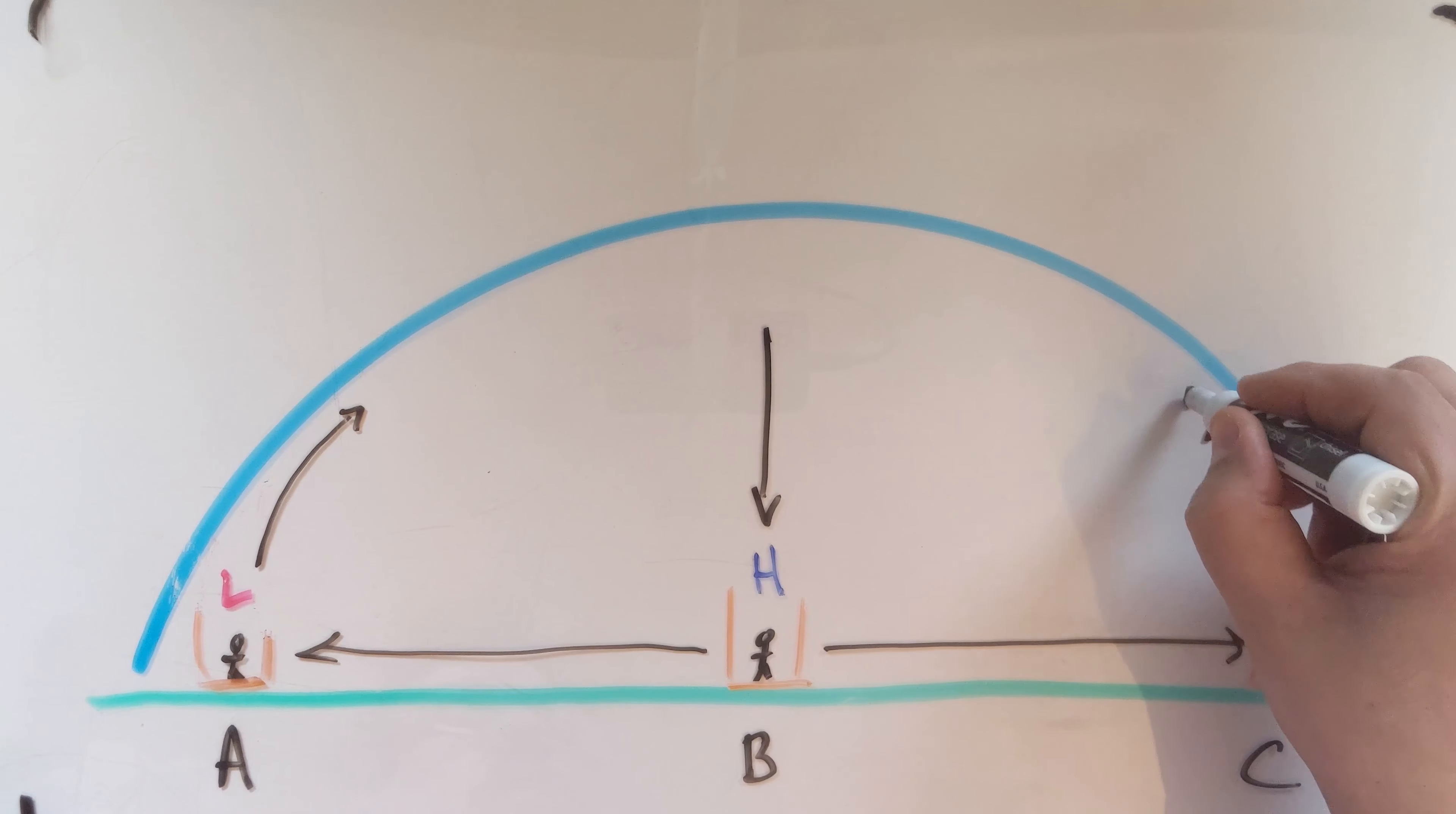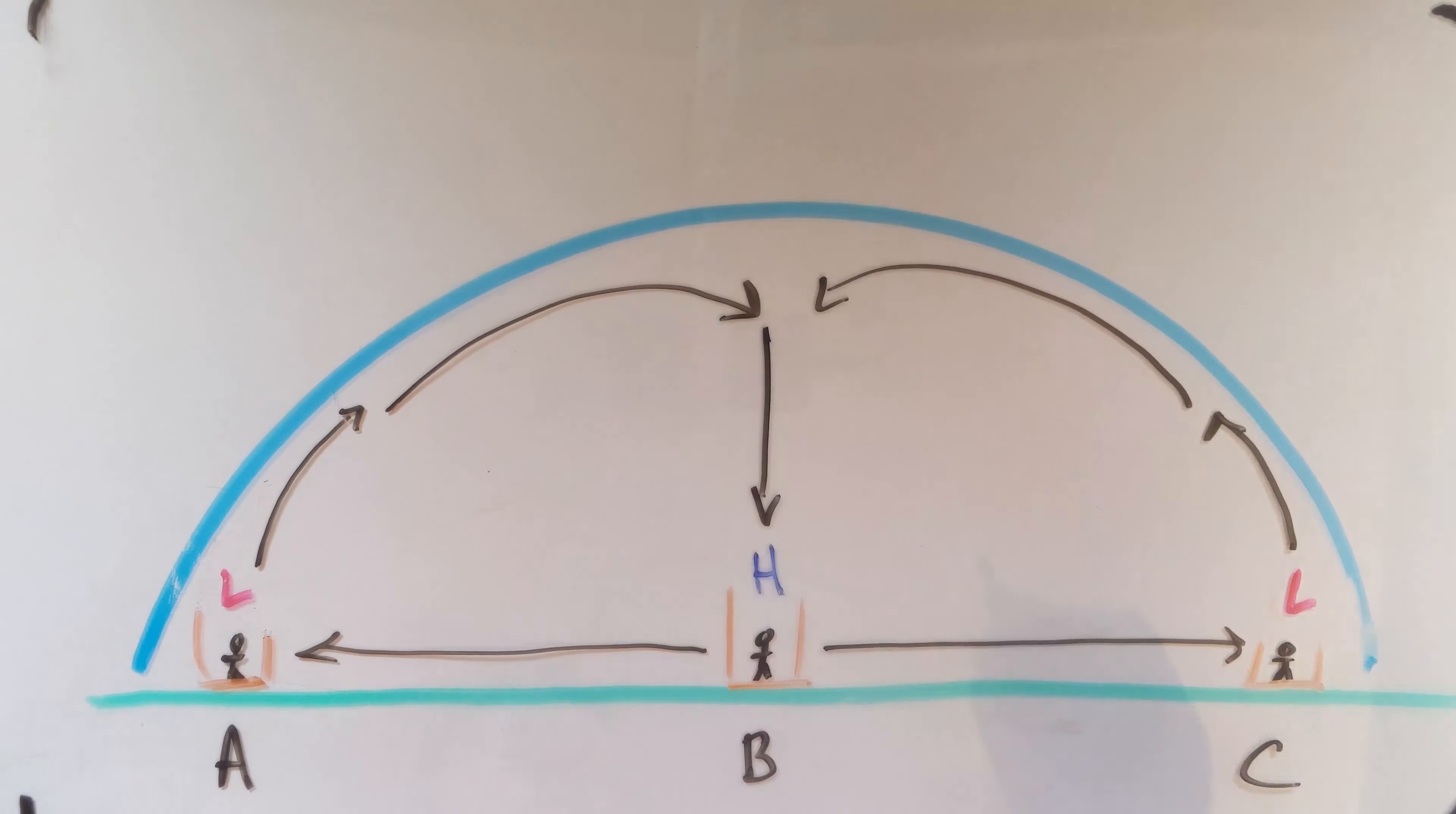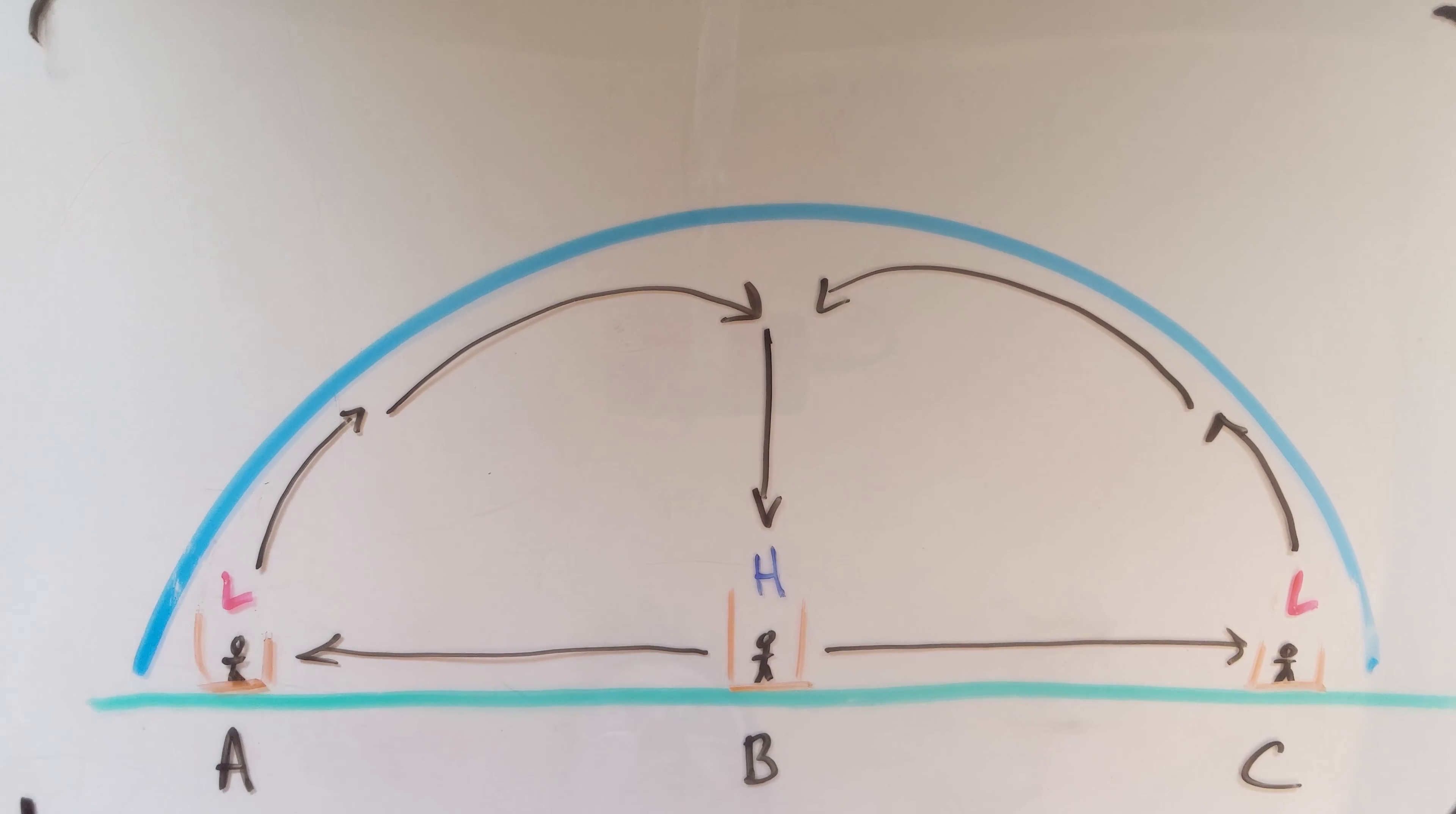Now this continues to create our convection cells and we get something like this. Now what that also means is that the air is rising here and here, and the air is sinking here and here. What is the lesson that we learned about hot air and cold air in terms of sinking and rising? Which one of these is hot? Which one of these is cold?